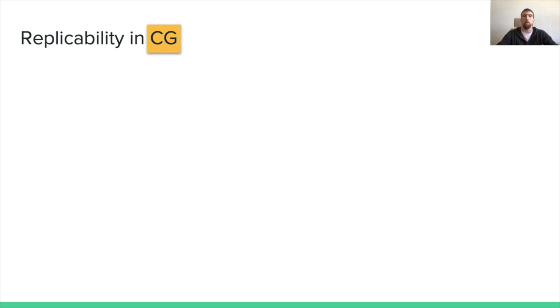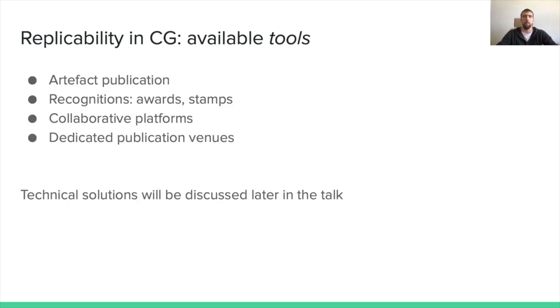This talk is about replicability in computer graphics. It's interesting to know if our research community is involved and aware of the benefits of replicable research, and if initiatives exist to encourage and recognize it. Let's first have a look at the tools and initiatives that support replicability at the community scale. We have four main categories: publication of artifacts alongside papers, recognition marks, collaborative platforms, and dedicated publication venues. We will discuss technical and practical solutions later in the talk.